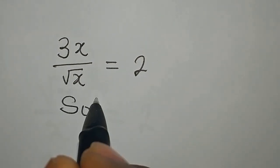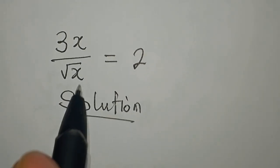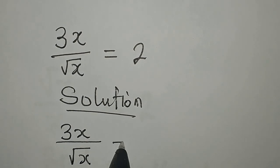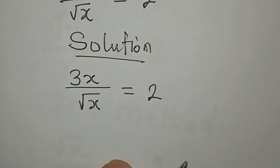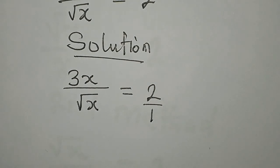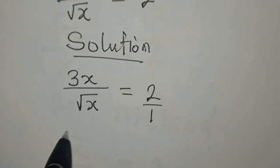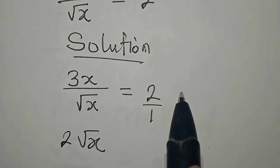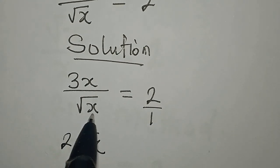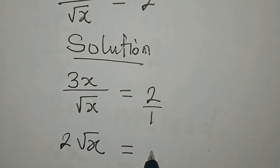Hello everyone. Let's provide a solution to this problem: 3x over square root of x equals 2. What we would do is cross-multiply, because this is over 1. Now we have root x multiplied by 2, which gives us 2 root x — it cannot be square root of 2x, because this cannot go in to multiply x. This will be equal to 3x times 1, which is 3x.